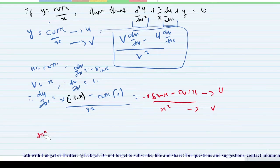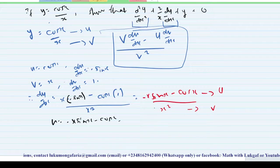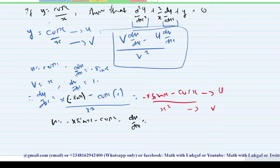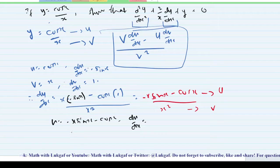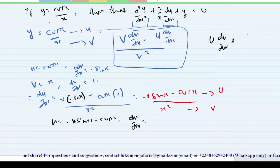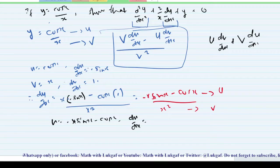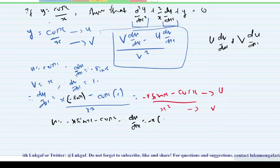So my u again is minus x·sin(x) minus cos(x). Which means my du/dx — don't forget, you are going to differentiate this — you are going to apply the product rule here, because you have two functions. The formula for the product rule is: u·(dv/dx) plus v·(du/dx). That is, differentiate the first function and leave the second as it is, plus differentiate the second and leave the first as it is.